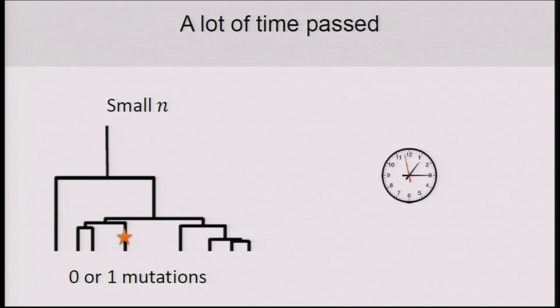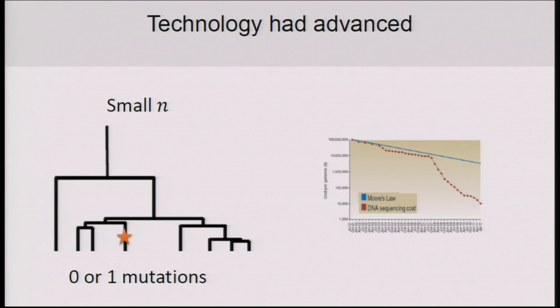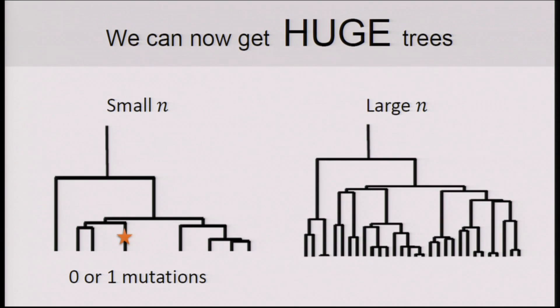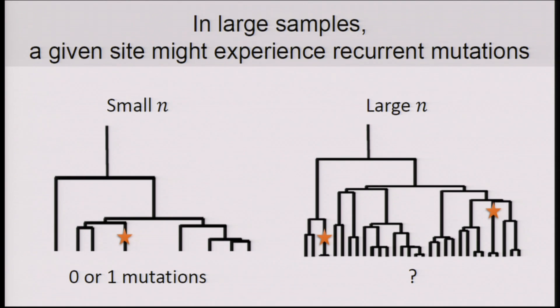Since Kimura suggested this model, a lot of time has passed, technology has advanced, and we can now get huge samples. With these large samples, we should think about much larger genealogies, and therefore we should concern ourselves with the possibility of getting more than one mutation within a sample. If that is indeed the case, the sites that would tend to exhibit recurrent mutations would be sites of higher mutation rates. The effect of such recurrent mutation would be an elevation in allele frequency, and therefore those variants would tend to be less rare. A lot of inference schemes based on the SFS really heavily rely on this infinite sites assumption, and we should ask whether it still holds for the large samples we deal with today.